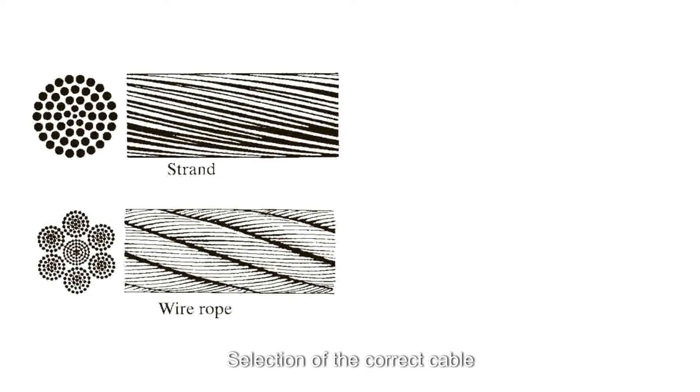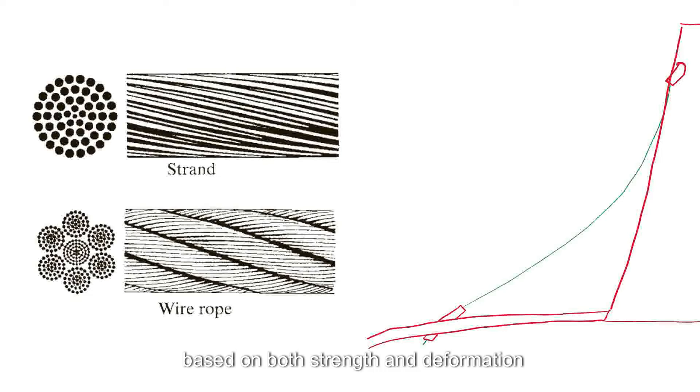Selection of the correct cable for a given loading is usually based on both strength and deformation considerations. In addition to ordinary elastic elongation, an initial stretching is caused by seating or shifting of the individual wires which results in a permanent stretch. For this reason, cables are often pre-stretched.